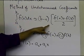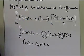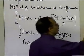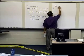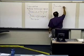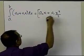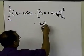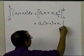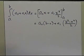Let's take a general straight line f(x) = a0 + a1·x. The exact value of the integral from a to b is a0·x + a1·x²/2, evaluated from a to b, which turns out to be a0·(b minus a) plus a1·(b squared minus a squared) divided by 2.